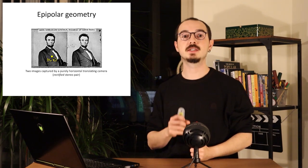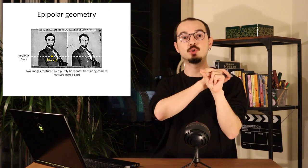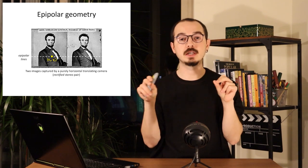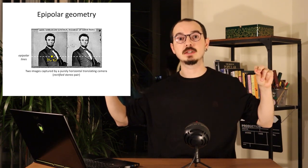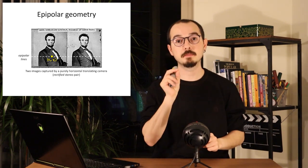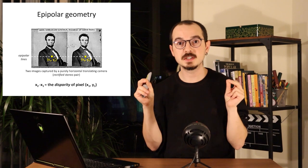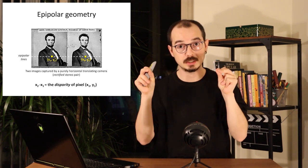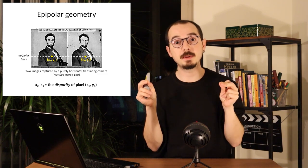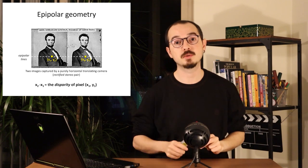If you have a point in one of the images, you can draw the epipolar line. When the pair is rectified, this epipolar line is just the horizontal line at the same height in both images. We try to find the matching point in the second image, and the difference in location of that point between the two images gives us the disparity of the pixel, which is directly related to its depth.